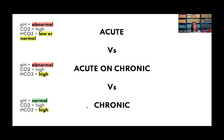A stable COPD patient walking around may have a normal pH even with CO2 in the sixties, because their kidneys have chronically compensated with bicarb in the thirties, forties, or fifties. Acute on chronic means they're not compensated; purely chronic means fully compensated. That's the general rule, with some exceptions.